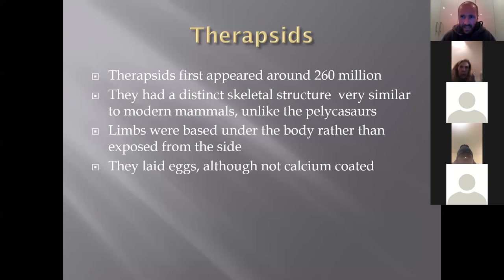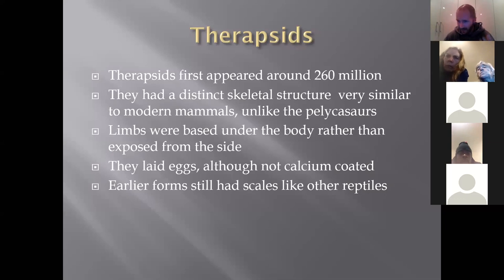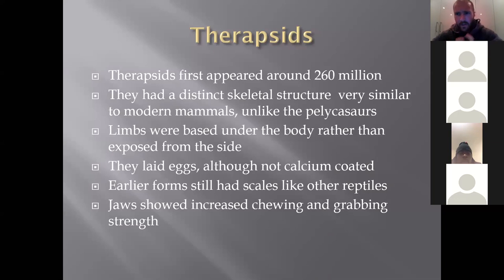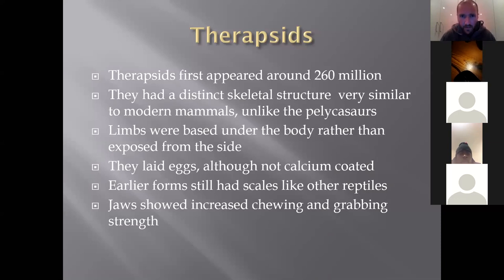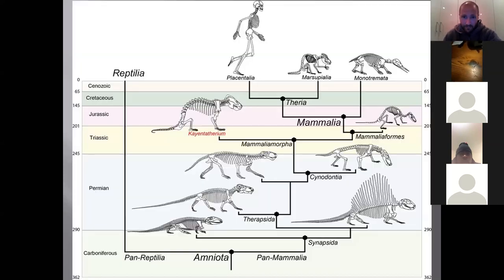The therapsids laid eggs, but they were papery-type eggs rather than calcium-coated, so very few preserved in the fossil record. Earlier forms still had scales like reptiles, but more modern forms were starting to show fossilized hair — somewhere between those osteoderms and the hair we have today, similar to how ancient birds had scales and feathers together. The jaws showed significant increases in size and strength, indicating they were far more adept at chewing, biting and grabbing rather than just the snapping action that reptiles have.